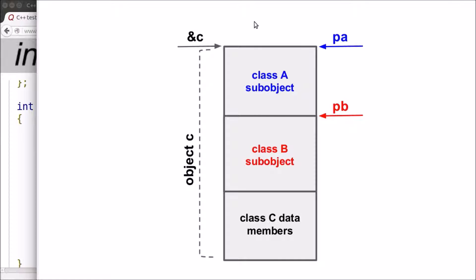In this picture, the large rectangle is object C. The first rectangle inside it is the sub-object of class A, and the second rectangle is the sub-object of class B. The bottom part of the large rectangle contains the data members of object C.